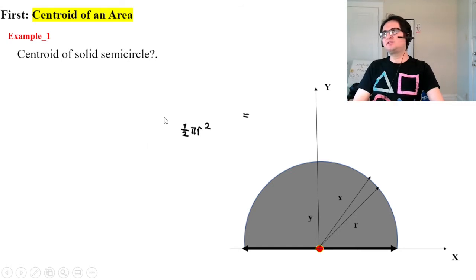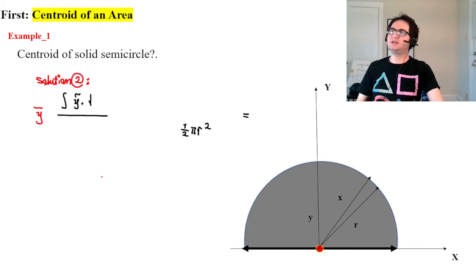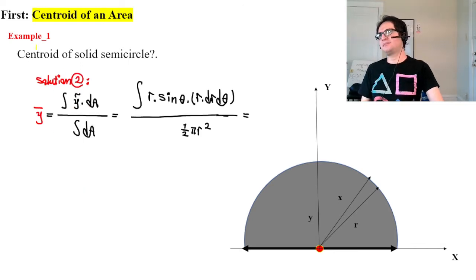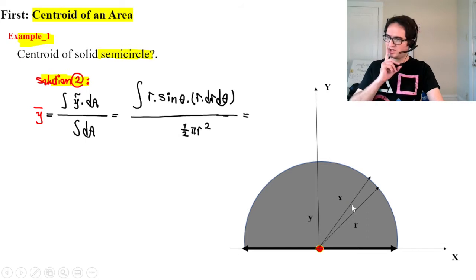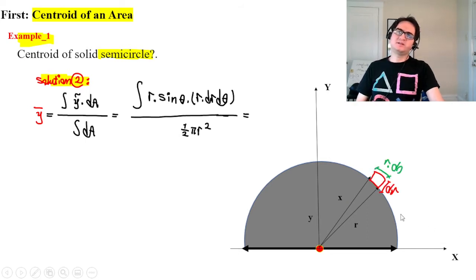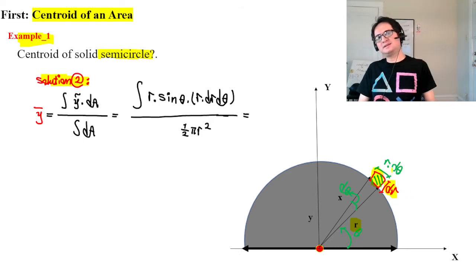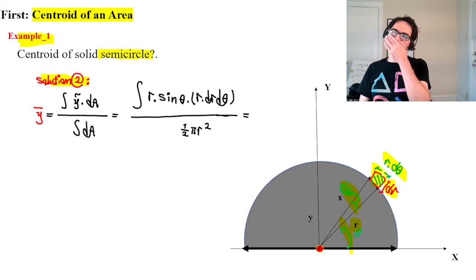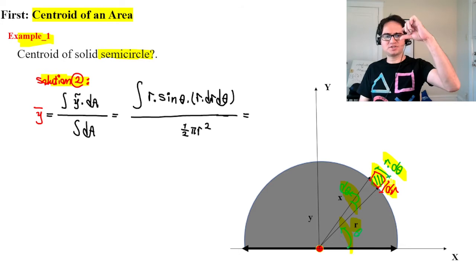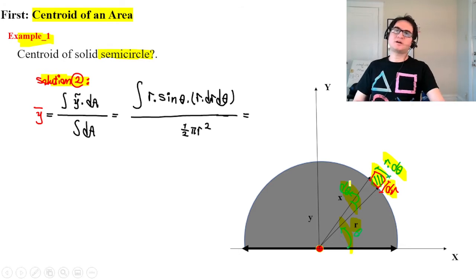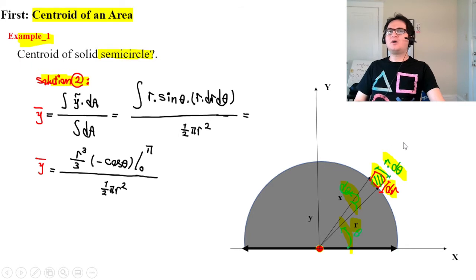Let's solve this with a different approach using polar coordinates. We develop an element of dr. If r is the radius and dθ is a small variation of the angle, then one side of the element is r dθ and the other is dr, giving an area element of r dr dθ.